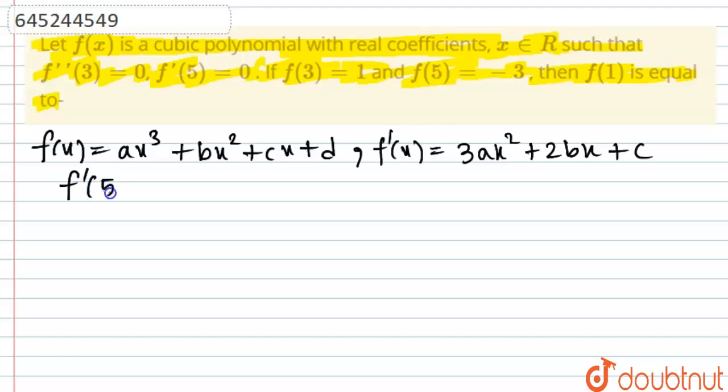f'(5) is basically 5 squared, that is 75a plus, now we put 5 here, then 10b plus c = 0.